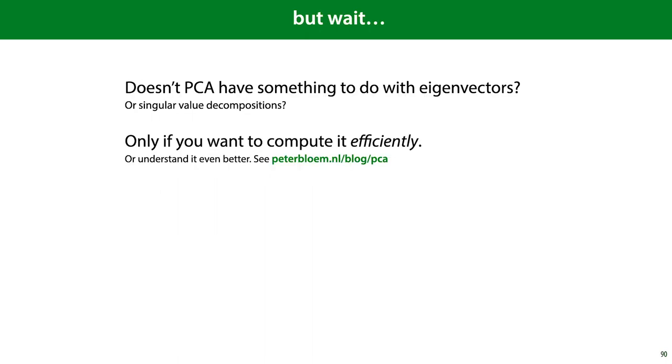If you've heard about PCA before, you may be wondering why I haven't discussed eigenvectors or singular value decompositions. These topics are only necessary if you want to know the deeper workings of PCA, and if you want to compute it efficiently. Computing PCA by gradient descent, one component at a time is illustrative, but in practice there are far more efficient and precise ways to do it.